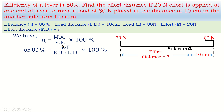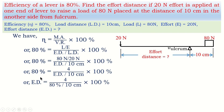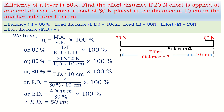Substituting: efficiency = (load/effort) ÷ (effort distance/load distance) × 100%. Plugging in values: 80% = (80 N / 20 N) ÷ (effort distance / 10 cm) × 100%. This gives 80/100 = 4 ÷ (effort distance / 10). Rearranging: effort distance = (4 × 10 cm) / (80/100) = 40 / 0.8 = 50 cm. Therefore, the effort distance is 50 cm.